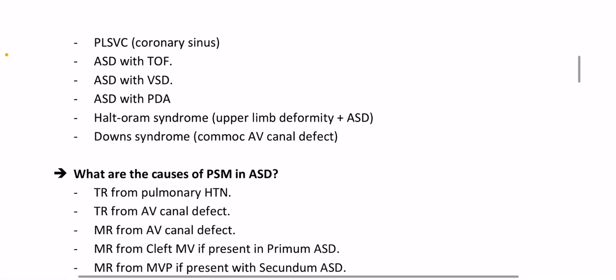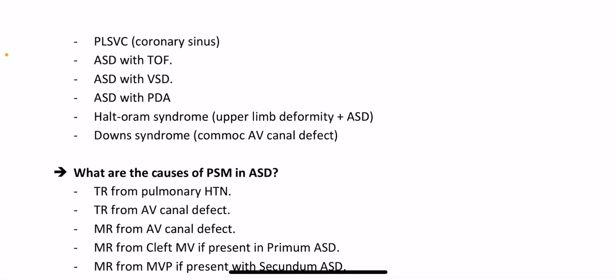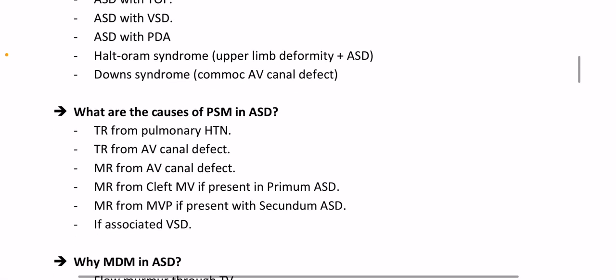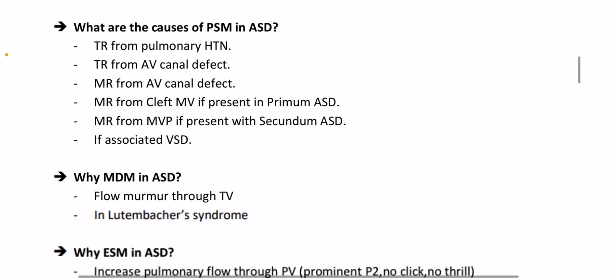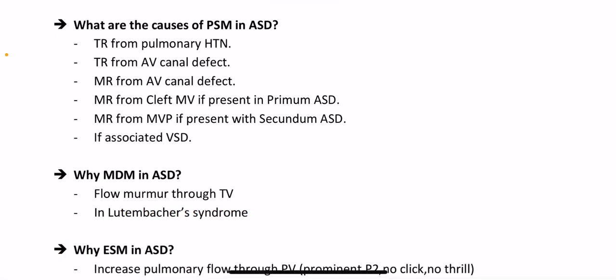Additional associations: PAPVD associated with coronary sinus type of ASD; ASD with TOF; ASD with VSD; ASD with PDA; Holt-Oram syndrome with upper limb deformity plus ASD; Down syndrome with common AV canal defect. What are the causes of pansystolic murmur in ASD? Tricuspid regurgitation from pulmonary hypertension, TR from AV canal defect, and MR from AV canal defect.